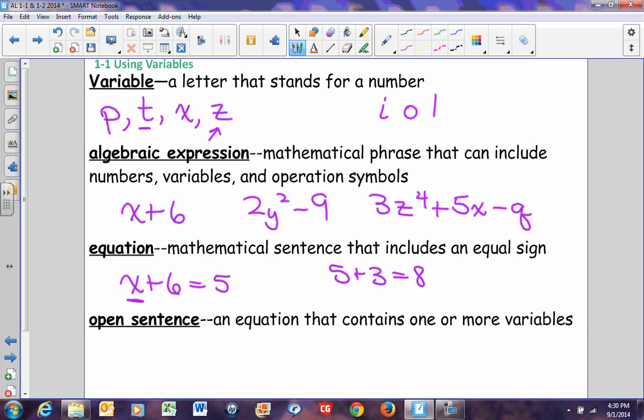An open sentence is an equation that contains one or more variables. What makes it different from an equation is you cannot say whether or not it is true or false. For example, up above we see the phrase, 5 plus 3 equals 8. That equation is true because 5 plus 3 does indeed equal 8.